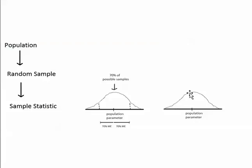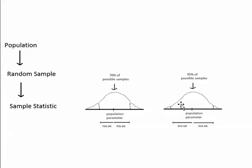Now let's look at another diagram. Let's mark off this point down here and this point up here, and let's say that 95% of the possible samples are between these two boundaries. If that's the case, then there's a 0.95 probability of getting a sample between these two boundaries, and the two distances would be the 95% margin of error. This diagram helps illustrate where the probability comes from — the probability that the sample statistic will fall in a certain area depends on the percentage of possible samples that are inside that area.